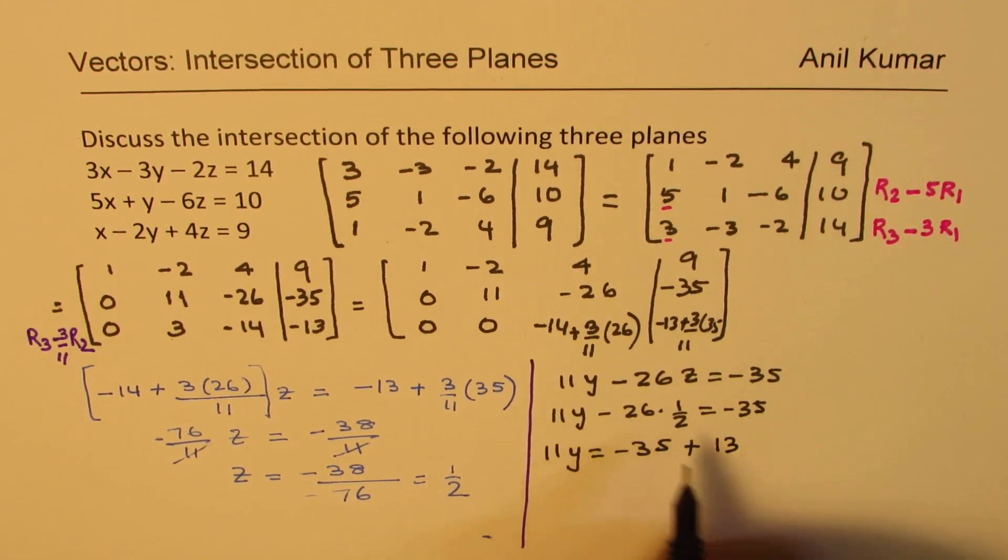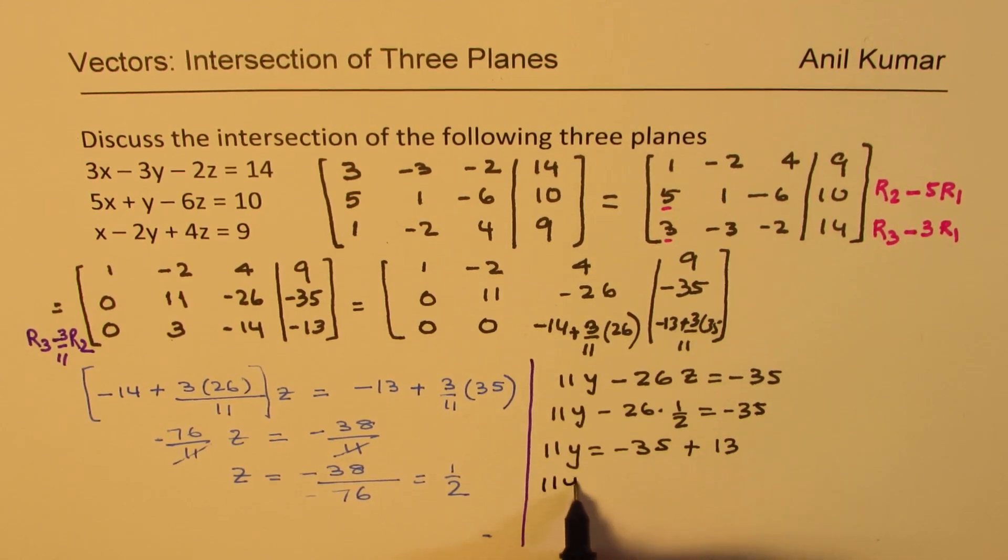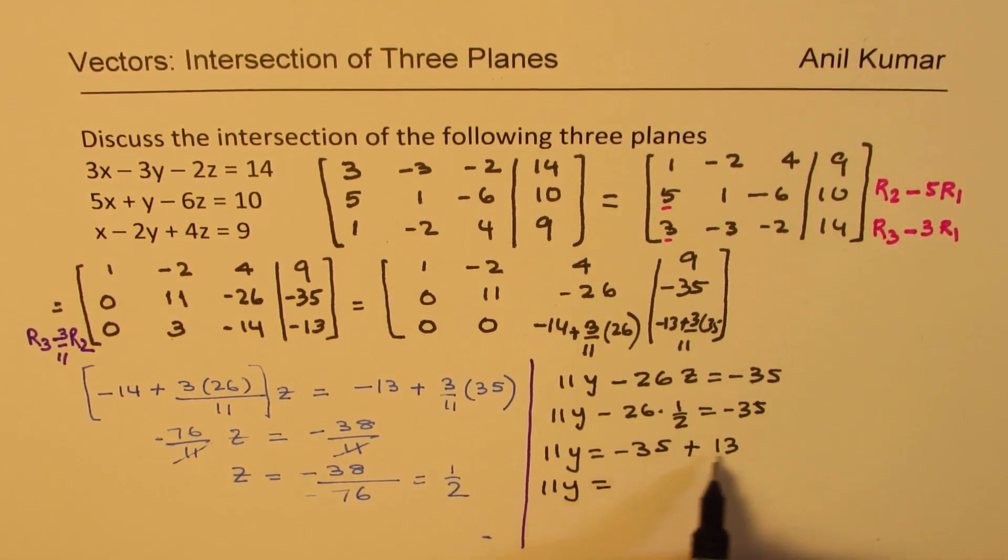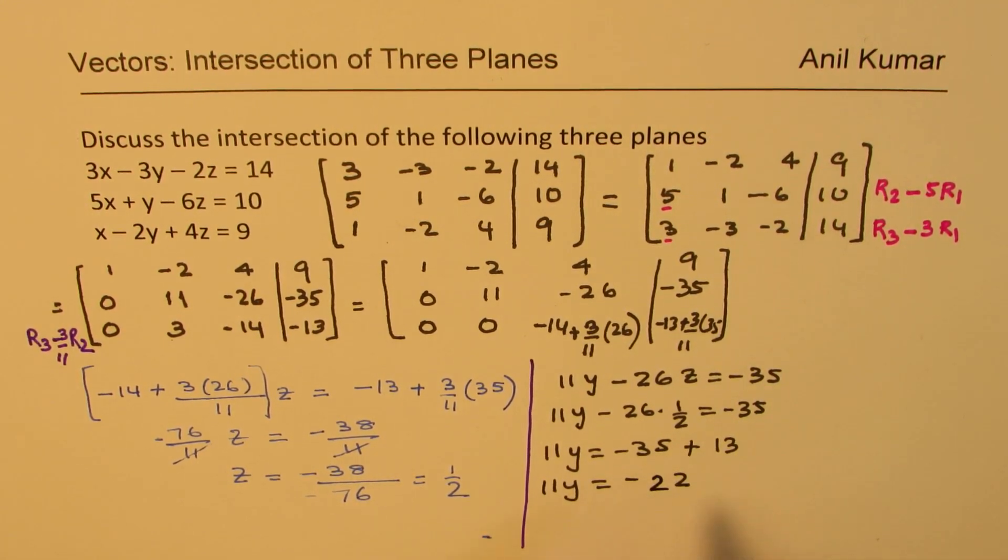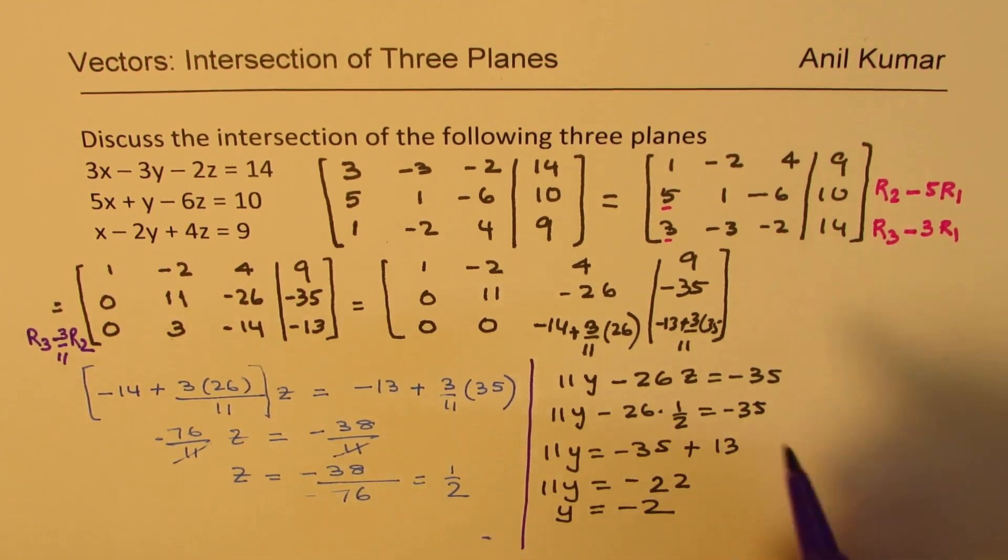Or 11y equals to minus 35 plus half of this, which is 13. Half 26. And so we get 11y equals to negative 22. So y is basically equal to negative 2.